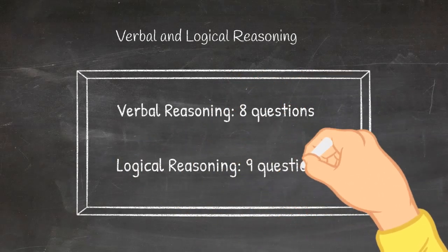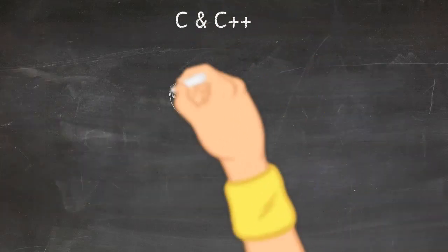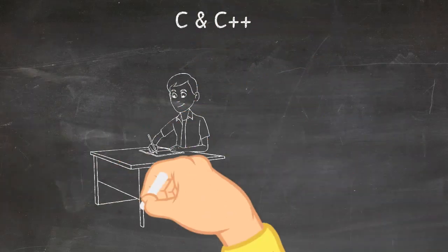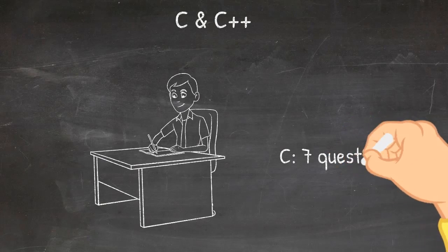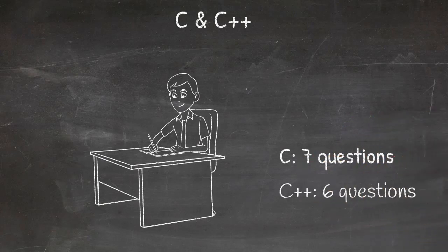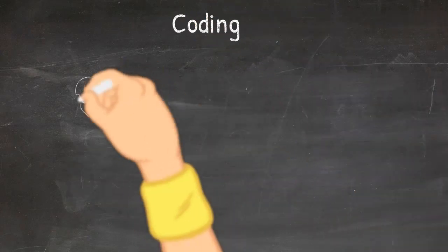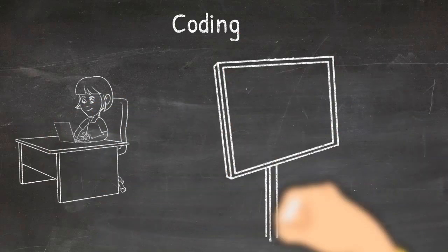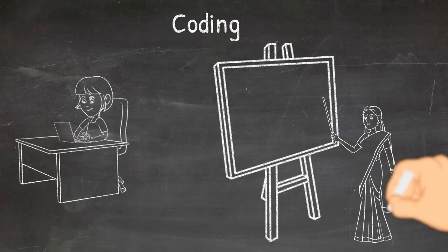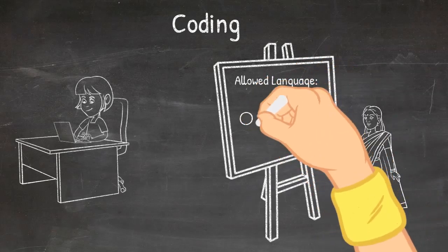Now C and C++, both are tested. C has seven and C++ has six questions. Next is Coding. So first of all, the allowed language is only C++ is allowed and nothing else, and there is only one coding question.